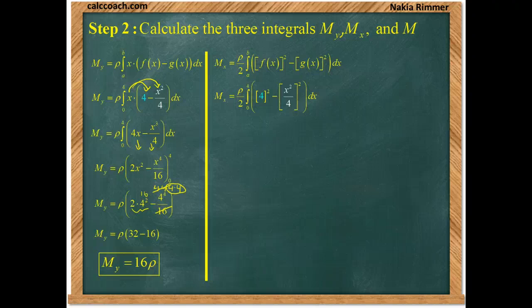In this formula, we have to square these guys before subtracting. Square the 4, you get a 16. Square x squared over 4, and you get x to the 4th over 16.